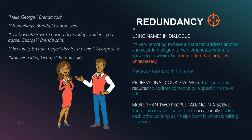This example was given to me early in my writing career and it's stuck with me. Imagine two people talking — George and Brenda: 'Hello, George,' Brenda said. 'Greetings, Brenda,' George said. 'Lovely weather we're having today. Wouldn't you agree, George?' Brenda said. 'Absolutely, Brenda. Perfect day for a picnic,' George said. 'Smashing idea, George,' Brenda said. See how silly that sounds? Constantly repeating the name over and over — we don't need that. Keep that example in mind when writing dialogue. When you're tempted to use a character's name in dialogue, ask yourself: if I was having this conversation, would I actually say the character's name? Nine times out of 10, you won't.